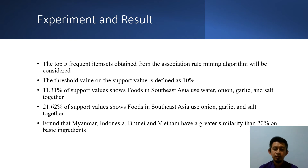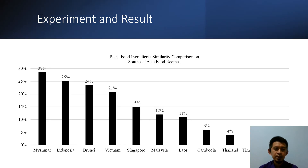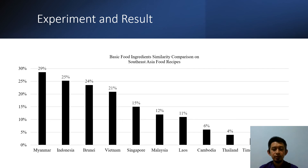Based on those findings, we found that countries — Myanmar, Indonesia, Brunei, and Vietnam — have greater similarity of more than 20% on basic ingredients. The chart confirms that Myanmar, Indonesia, Brunei, and Vietnam have more than 20% similarity on basic ingredients, which are onion, garlic, salt, and water.